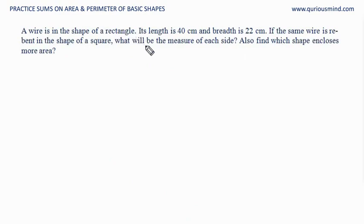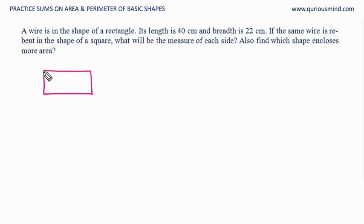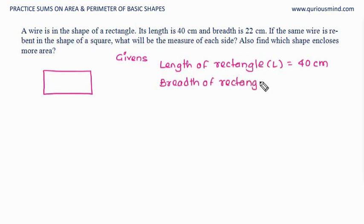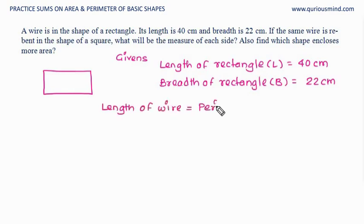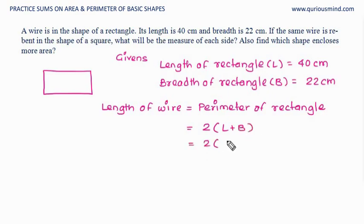A wire is in the shape of a rectangle. Its length is 40 centimeters and breadth is 22 centimeters. If the same wire is rebent in the shape of a square, what will be the measure of each side? Also find which shape encloses more area. The length of the wire equals the perimeter of the rectangle, which is 2 times (length plus breadth). So the length of wire is 124 centimeters.